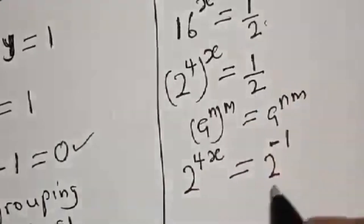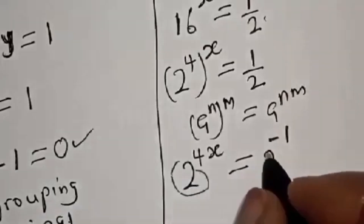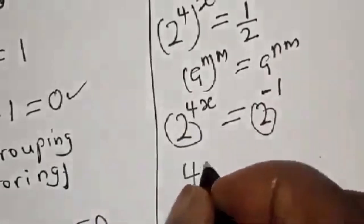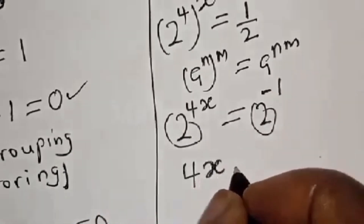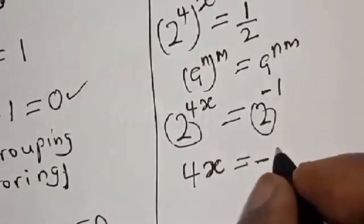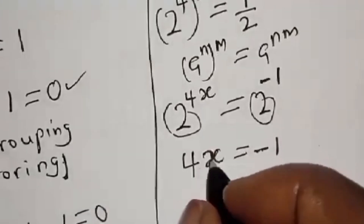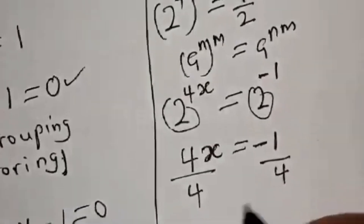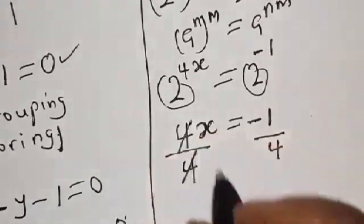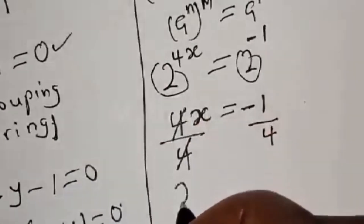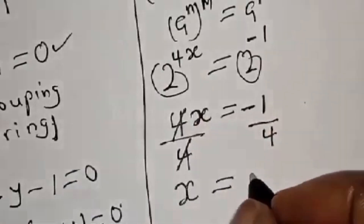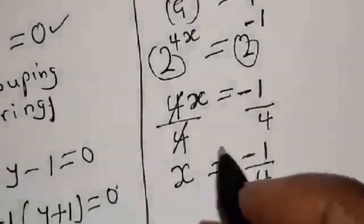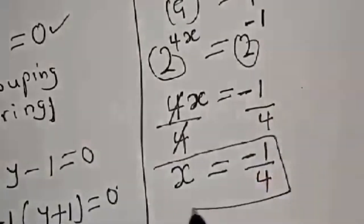Since the bases are equal, we equate the exponents: 4s equals minus 1. Dividing both sides by 4, s is equal to minus 1 over 4. That is the first value of s.